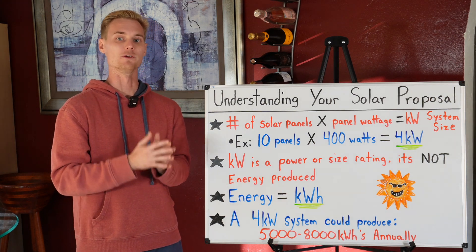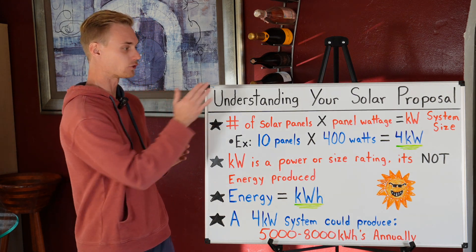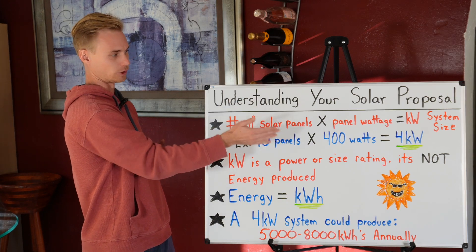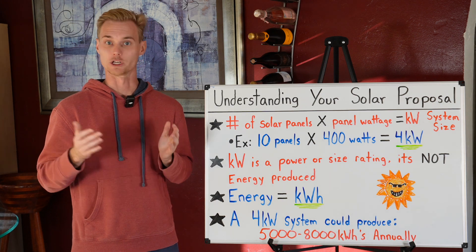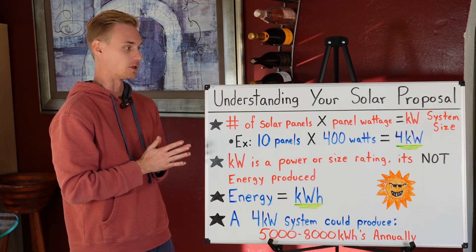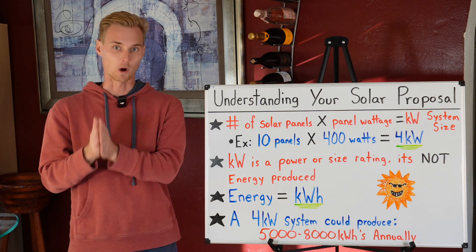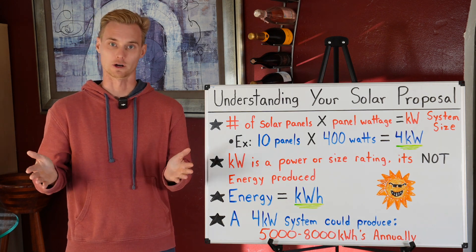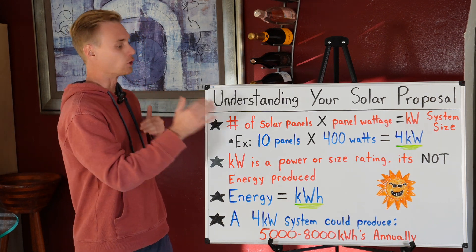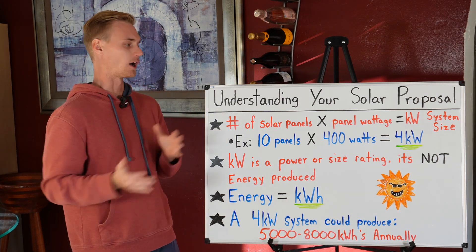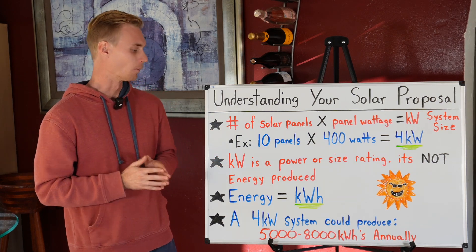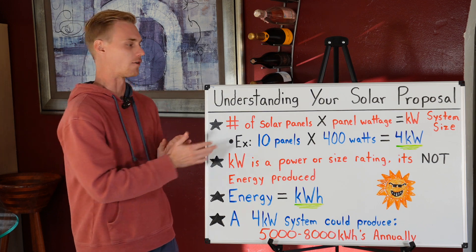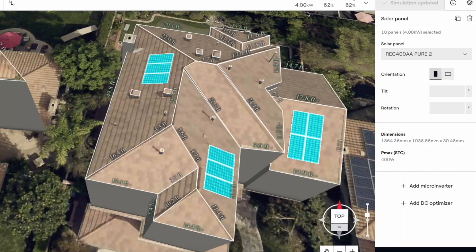In theory, if your system produced four kilowatts for 20 hours in a row, that would simply be four times 20, and that would be 80 kilowatt hours. So you can start to put the time into the equation and understand kilowatts versus kilowatt hours. But it's really important to understand that a four kilowatt system is not going to produce four thousand kilowatt hours in a year.